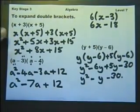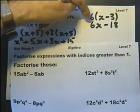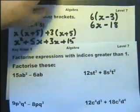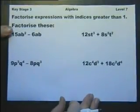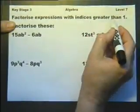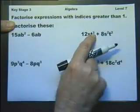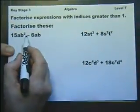Expanding double brackets. Now, before I go on to this page, let's look at this. This is called expanding. But when you go the other way, it's called factorising. So, we need to factorise expressions with indices greater than 1. These little numbers are called indices, or powers. And they're sometimes greater than 1. So, let's factorise these. Let's look at the number first.